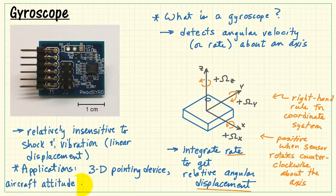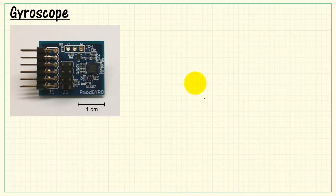Some applications of gyroscopes include, you could use this as the basis of a 3D pointing device. They are very important for aircraft navigation, where you're wanting to know the attitude of the aircraft, pitch, roll, and yaw. So for navigation purposes, gyroscopes are very, very common.